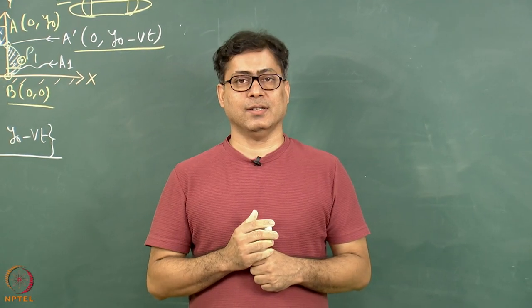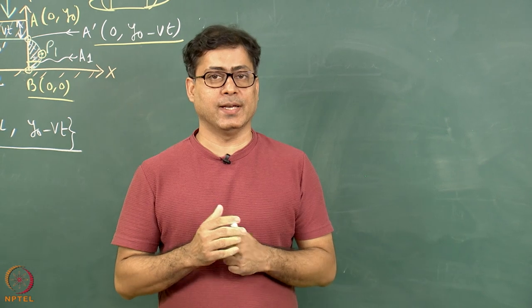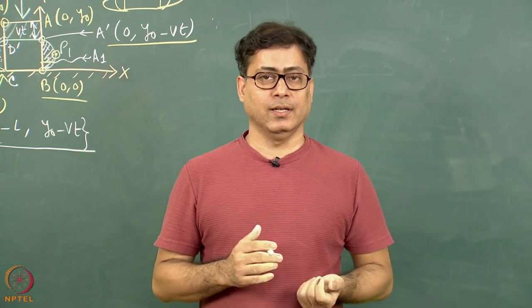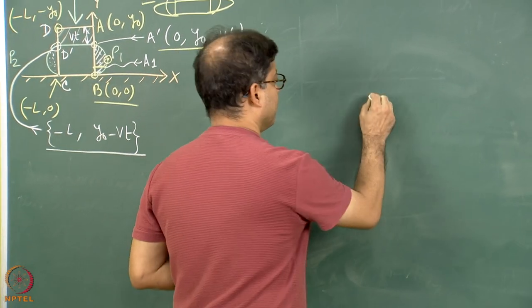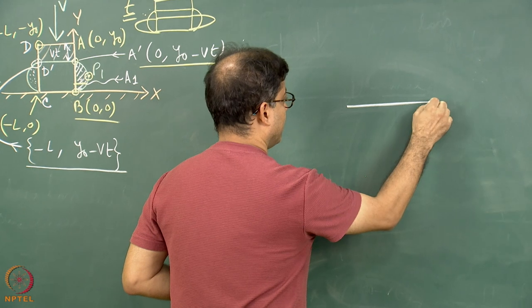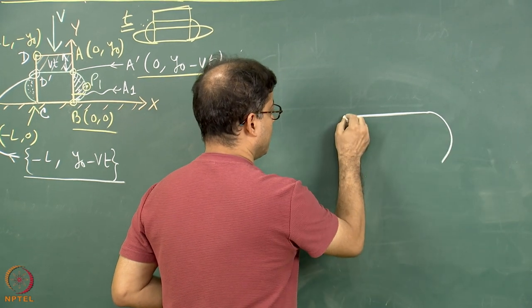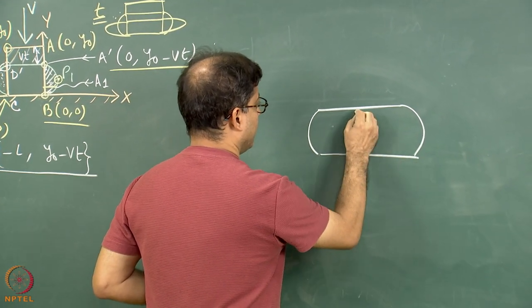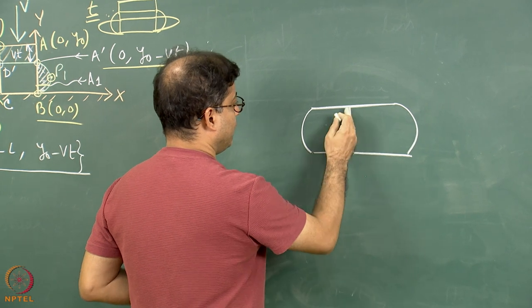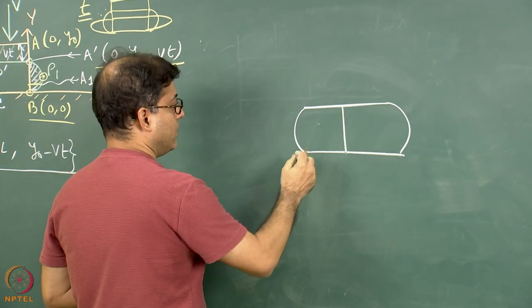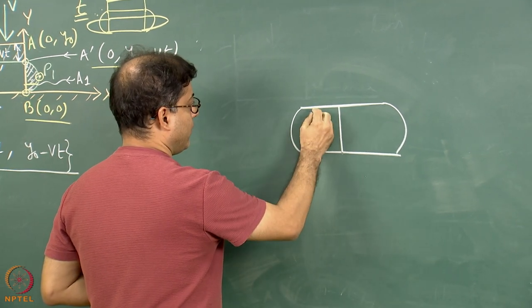Let us try to understand how the shear sense would be expected if a pure shear zone is present. We have drawn the pure shear zone. There is a straight line in the middle which has become a parabola.